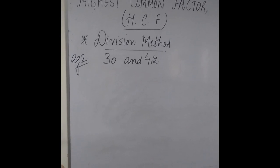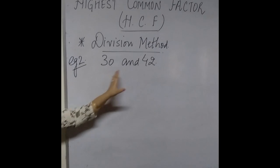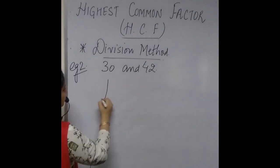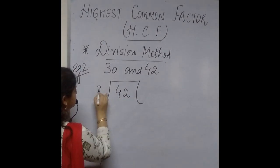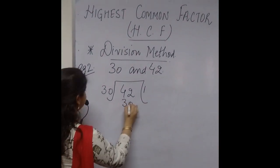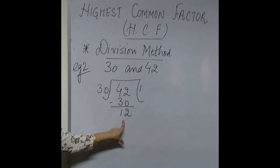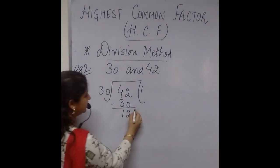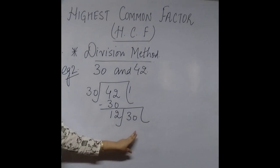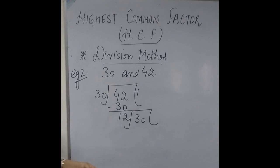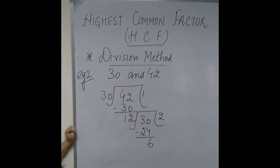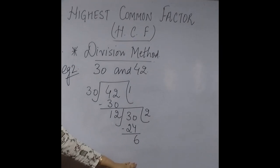Now let us carry out one more example using the division method. The two numbers are 30 and 42, and we have to find the Highest Common Factor. We place 42 inside and 30 outside as the divisor. In the table of 30, 30 times 1 is 30, and the remainder is 12. This remainder 12 now becomes the divisor and 30 becomes the dividend. We check the table of 12: 12 times 2 is 24, and subtracting leaves a remainder of 6.